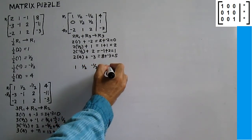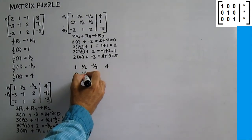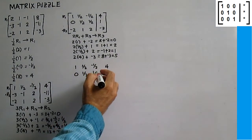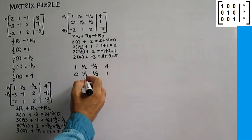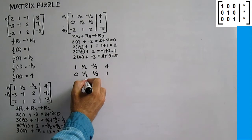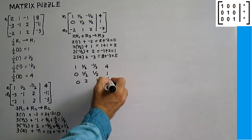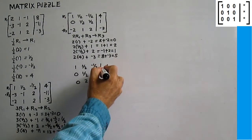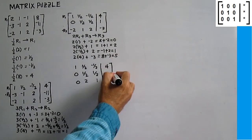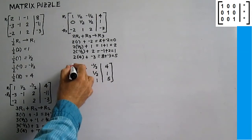New matrix after replacing row 3: Row 1: 1, 1 half, negative 1 half, 4. Row 2: 0, 1 half, 1 half, 1. Row 3: 0, 2, 1, 5. We're done with column 1. Let's proceed to column 2.